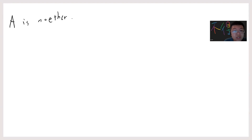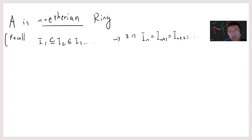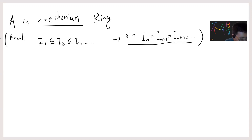So our setting is a Noetherian ring. Sometimes I'm hard to pronounce this word, so I usually pronounce this 'Noetherian ring.' Recall that a Noetherian ring means that if you have an ascending ideal chain, then there is N such that it will terminate — basically, there is this N such that every ideal from that point on will be the same. And the theorem says that if A is a Noetherian ring, then A[x] is a Noetherian ring.